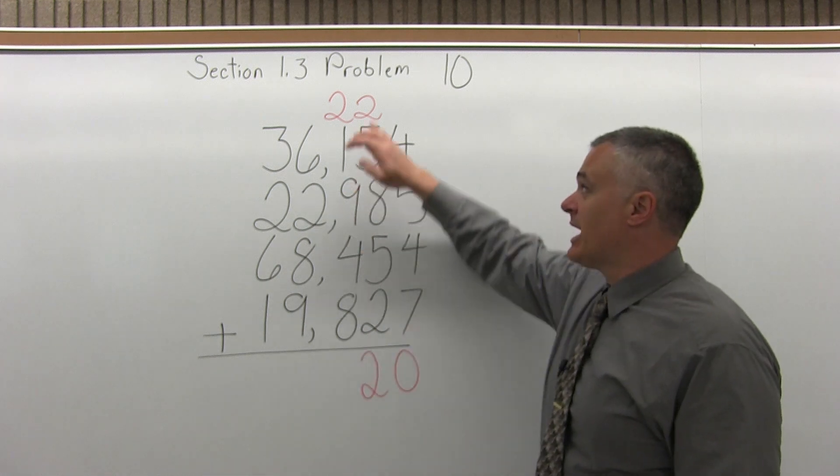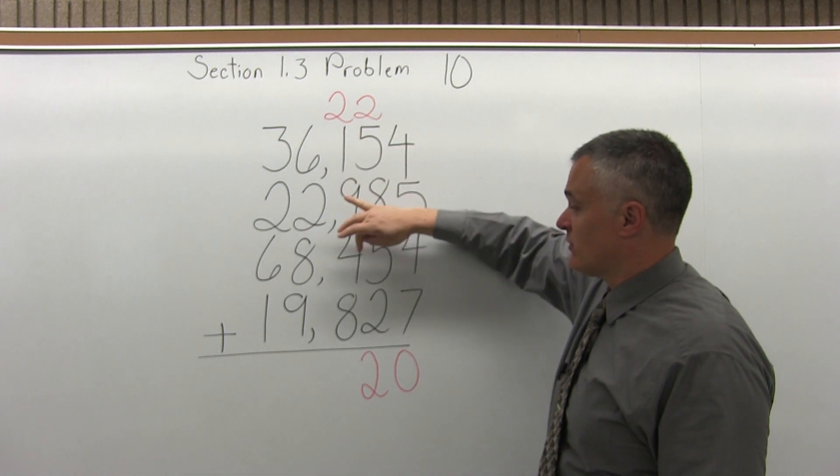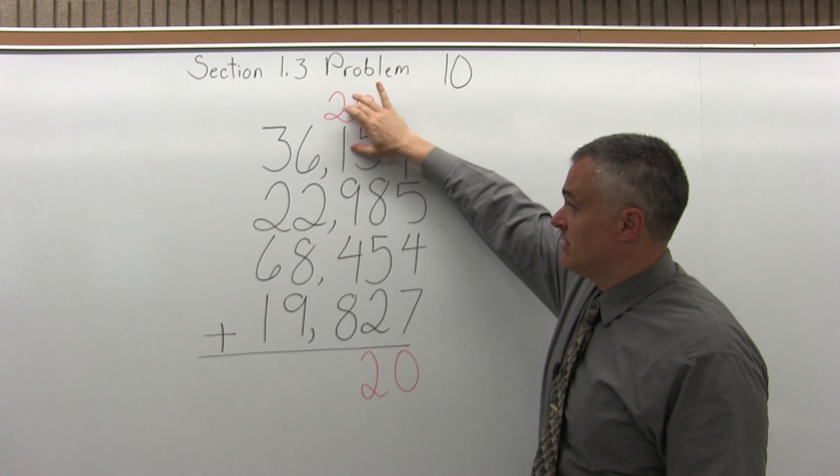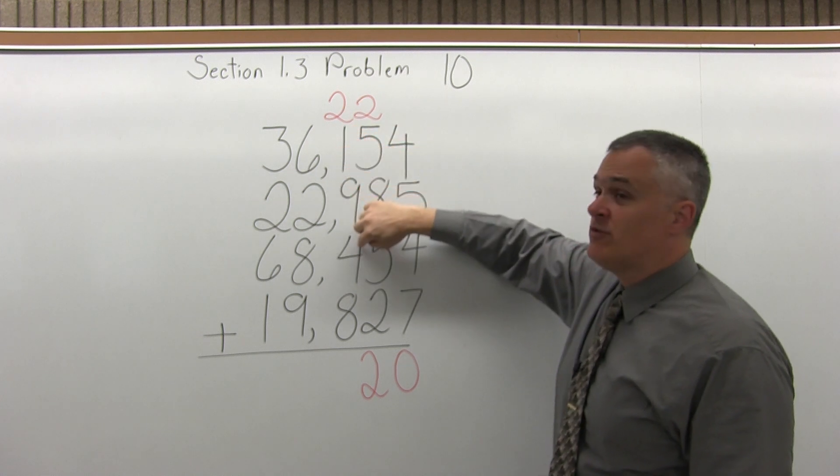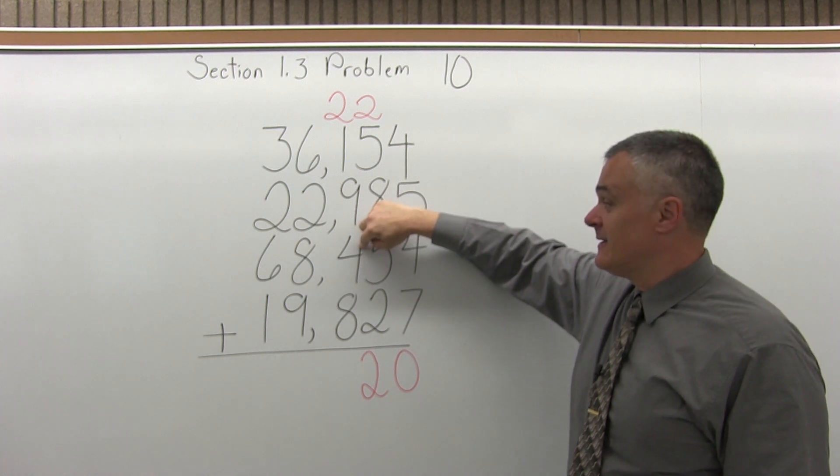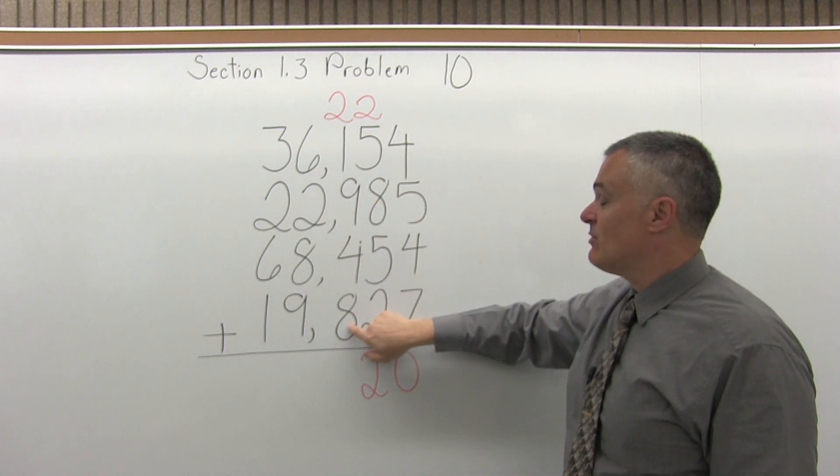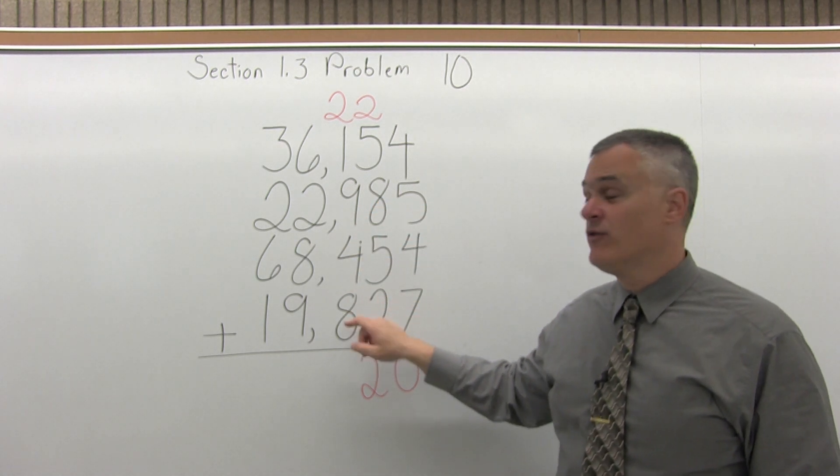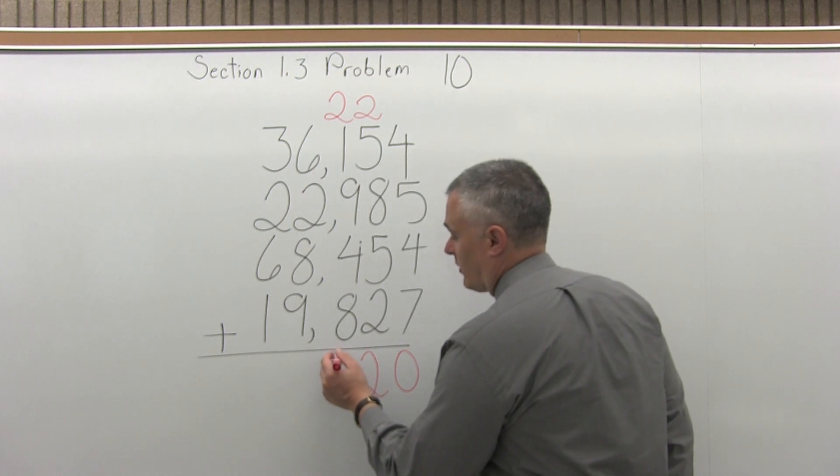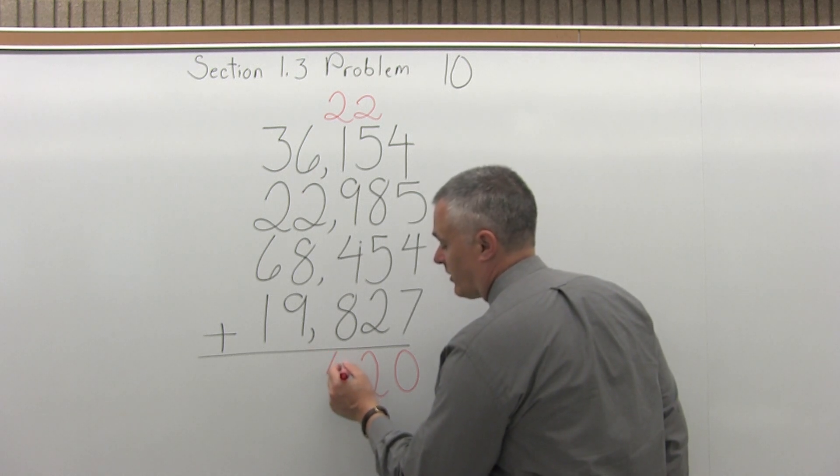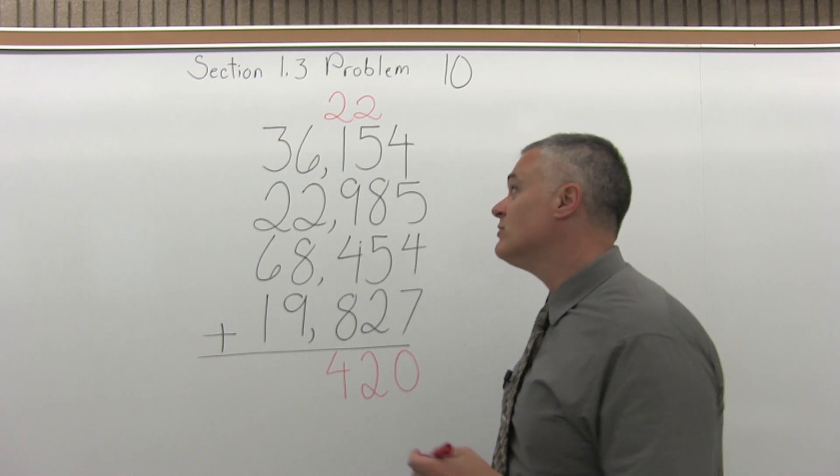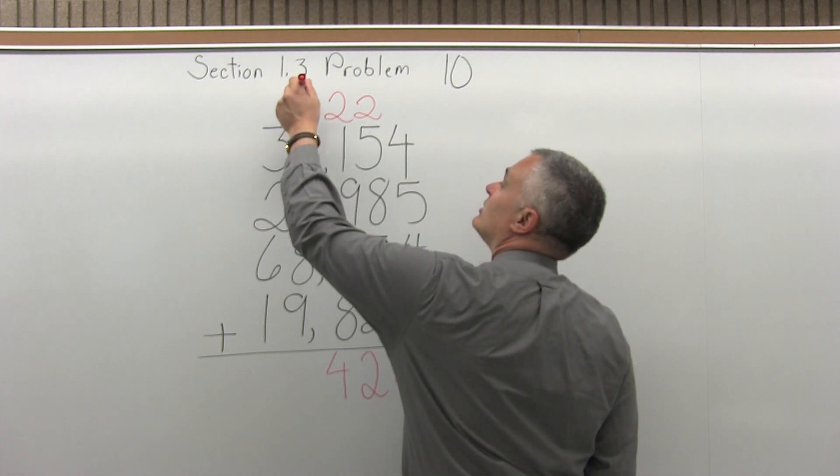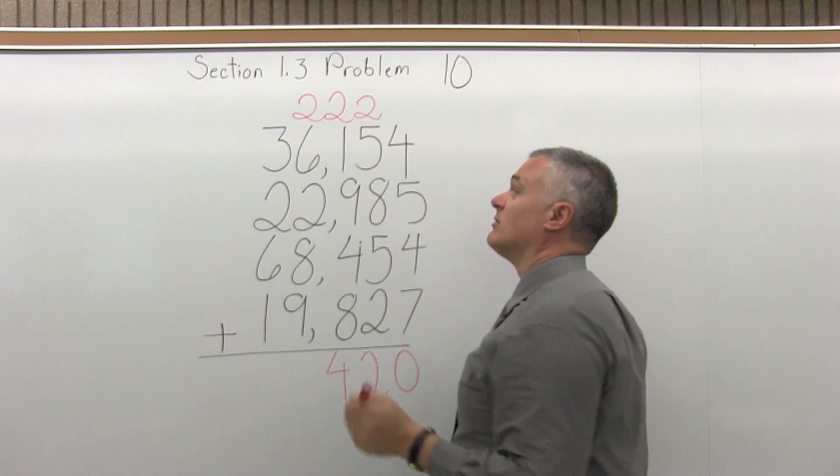And now I will add 2 plus 1 plus 9 plus 4 plus 8. 2 plus 1 is 3, 3 plus 9 is 12, 12 plus 4 is 16, 16 plus 8 is 24. So for 24, I take the 4 from the 24 and write it under the column of digits that I just added. Then I take the 2 from the 24, carry it to the top of the next column of digits.